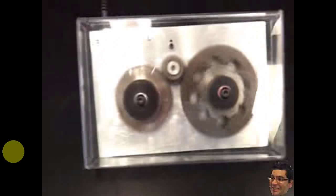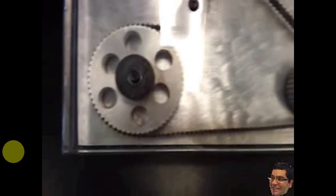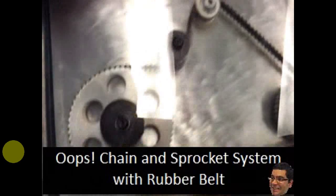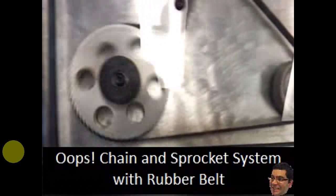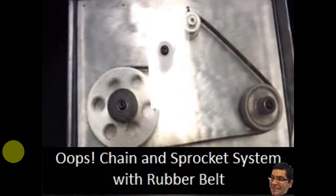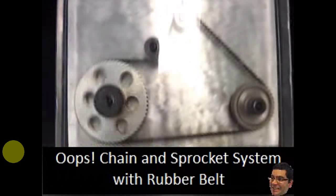So you're looking here at a gear train there. Here, you're looking at a chain and sprocket. I made a mistake. I called it a gear train. But it's a chain and sprocket, but with a rubber belt. Not a metallic chain.